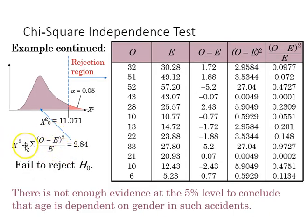After we calculate our test statistic using our formula, here's the table. We take the sum of each of these rows and add them together, and what we get from that is 2.84, and that falls not within the rejection region, so we fail to reject the null hypothesis. There's not enough evidence at the five percent level to conclude that age is dependent on gender in such accidents.